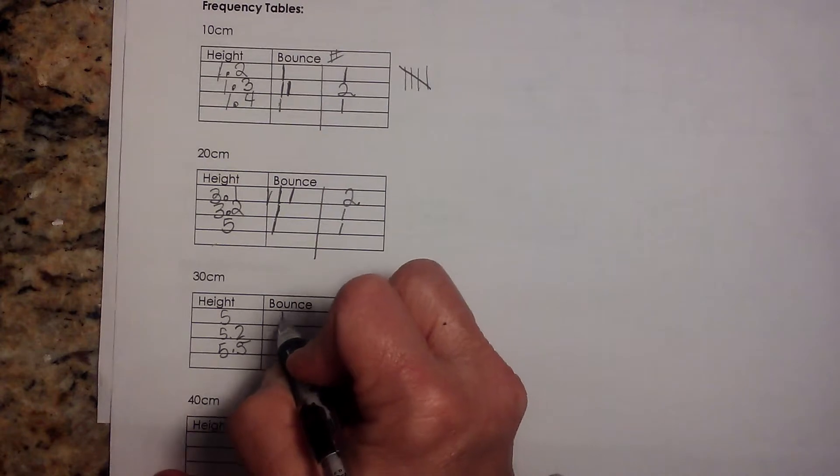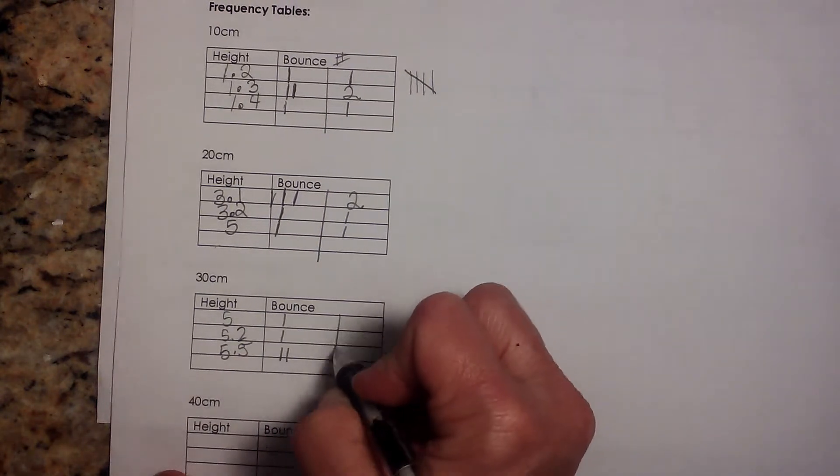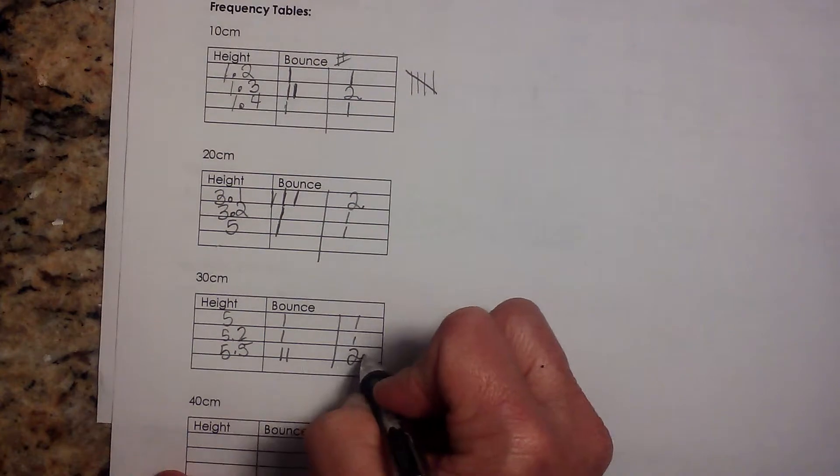And tallying it up, I have a 1, I have a 1 and then I have a 2. So it's going to be 1, 1, 2 as my totals.